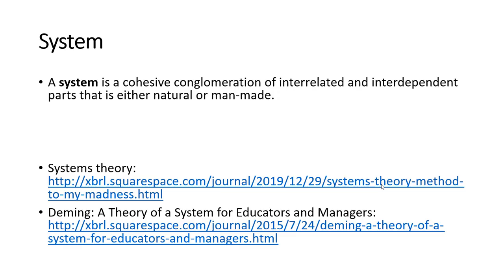First, what is a system? A system is a cohesive conglomeration of interrelated and interdependent parts that is either natural or man-made. There's a lot of information about systems, but I have a link to some information on system theory and a very good 20-minute video that Deming created that explains systems, so if you need to know more just check out those links.